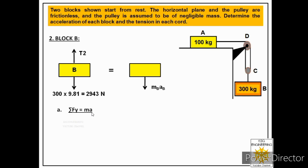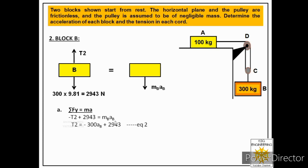Applying Newton's second law in the y-direction: ΣFy = m·a. Weight acts in the direction of motion so it is positive; tension T2 acts opposite to the direction of motion so it is negative. The equation becomes: −T2 + 2943 = mB·aB, which reduces to T2 = −300·aB + 2943.